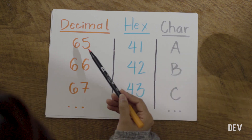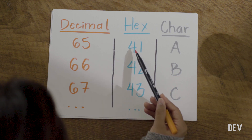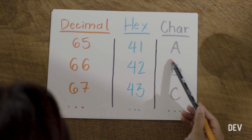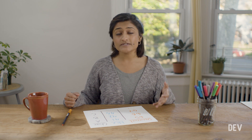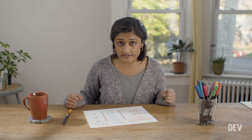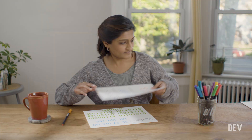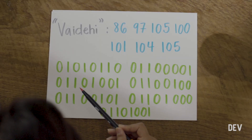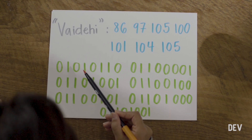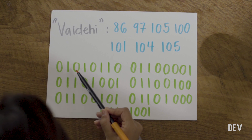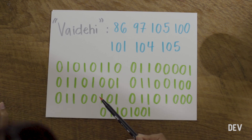For example, in the decimal number system, the number 65 can be converted into hexadecimal, which is the equivalent of capital letter A. Let's see an actual example of what it means to use the ASCII encoding table to convert between binary and another number system. Down here in green we see my name represented in the full form binary version. The capital letter V is represented with 0 1 0 1 0 1 1 0, and the same goes for the rest of the letters in my name as well.